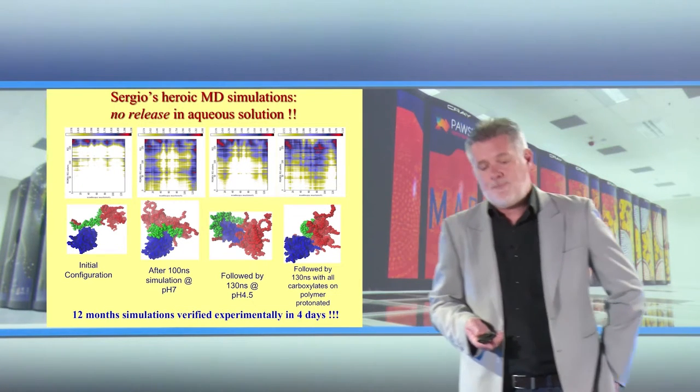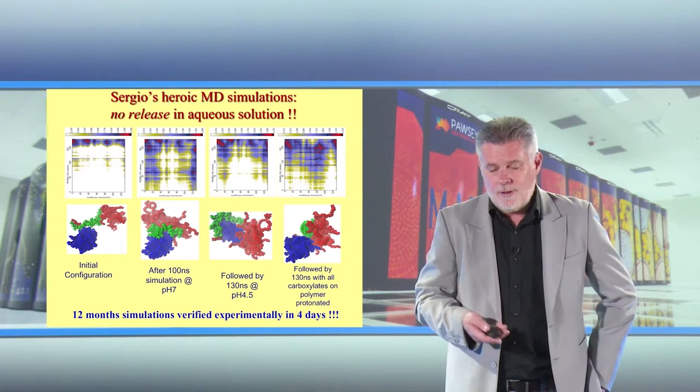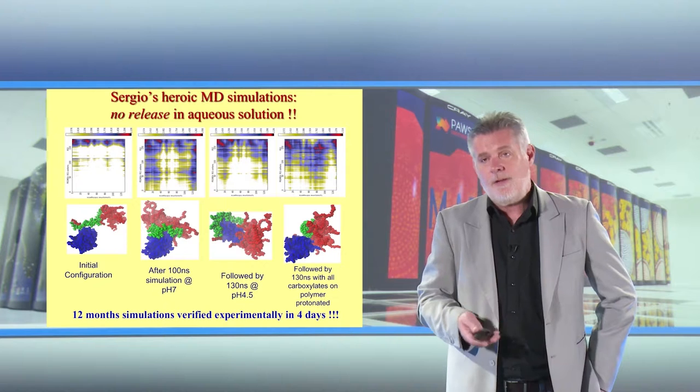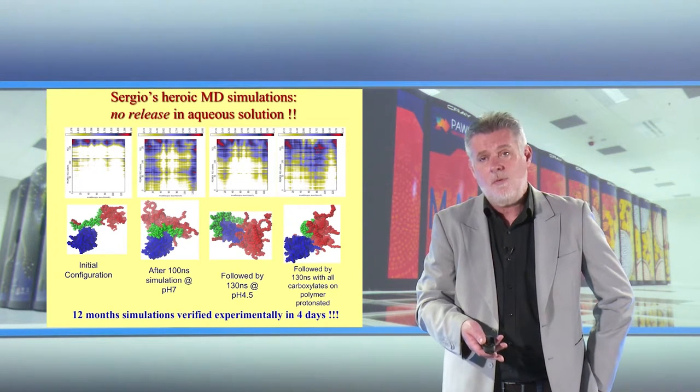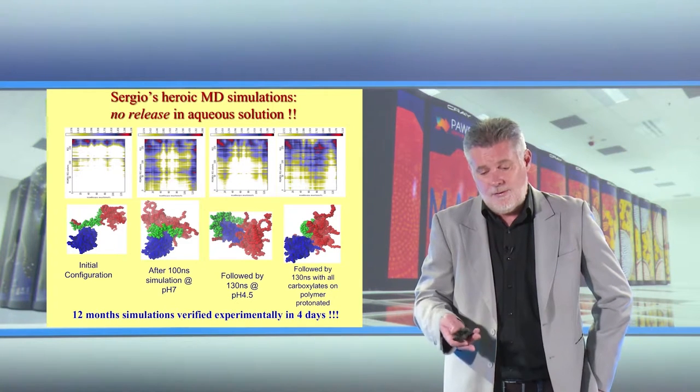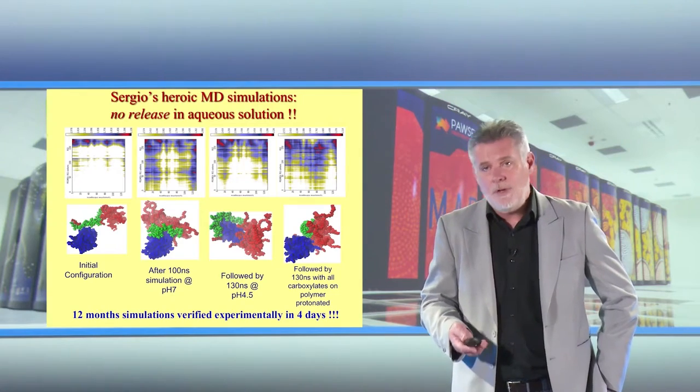This was puzzling for us because Martina's group had been doing delivery studies on this system and found that once it gets into a cell, it does release. We asked ourselves: what's the difference between what we did and what they did? Well, our simulation is in water — a periodic cell in water — and we found it doesn't release at pH 4.5. Martina then asked her postdoc Charles to rerun the experiment in water this time, not delivering into a cell. Four days later, Charles came back and said absolutely, it doesn't release — he could see this from his confocal microscopy in water. This gave us a lot of confidence that our simulations are not pie in the sky; they're quite robust and give meaningful results.